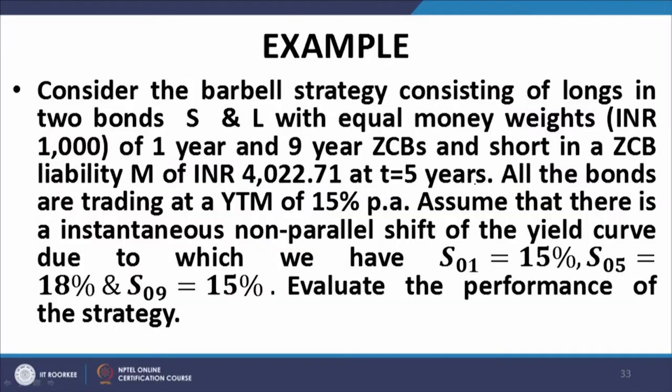Let us continue with the example that will illustrate the use of the butterfly. We consider the barbell strategy consisting of long positions in two bonds S and L with equal money weights — INR 1000 of one year and nine year zero coupon bonds.